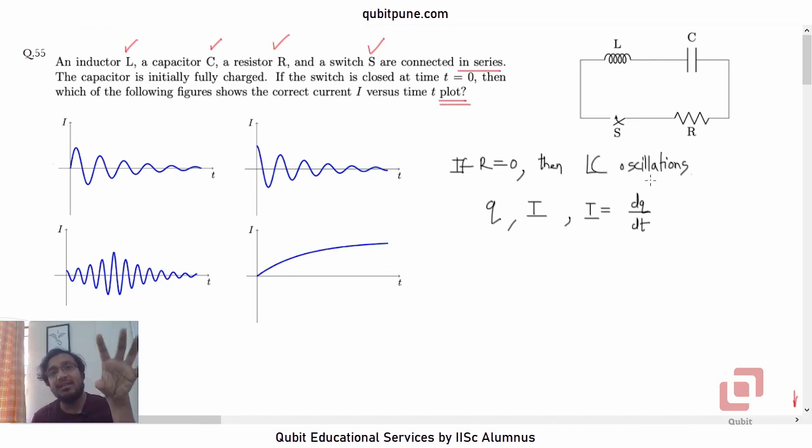Now, what is the specialty of LC oscillations? If we draw the graph of the LC oscillations against time, be it charge or current, it is going to be a sinusoid. We know that. But here, R is not 0. Here, R is not equal to 0.